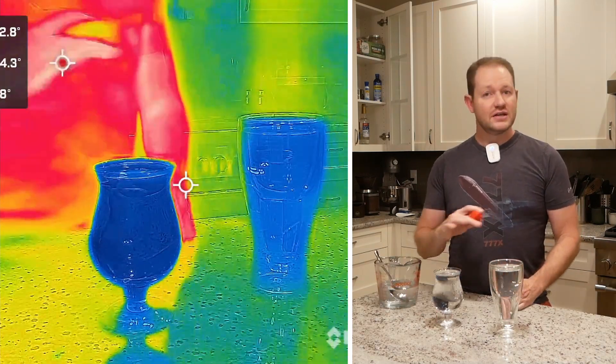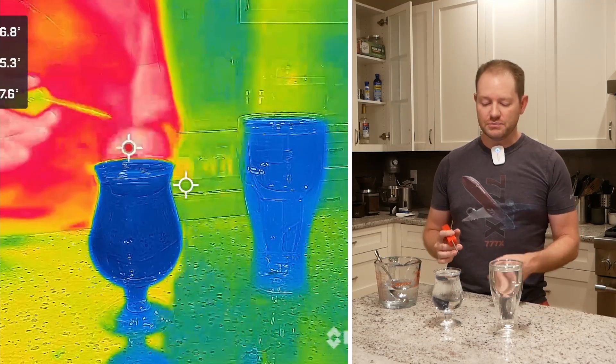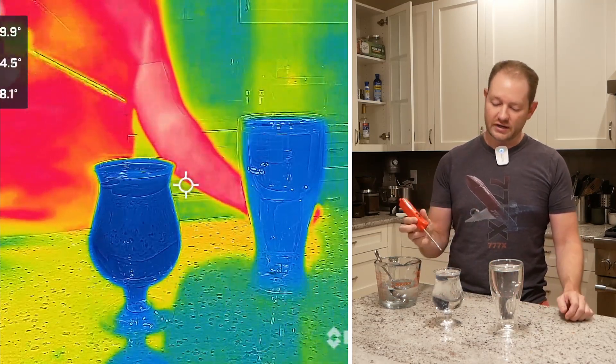All right guys, so it's been about an hour now, so let's see how both of these warmed up. Again, 12 ounces in both, uninsulated over here, insulated over here.